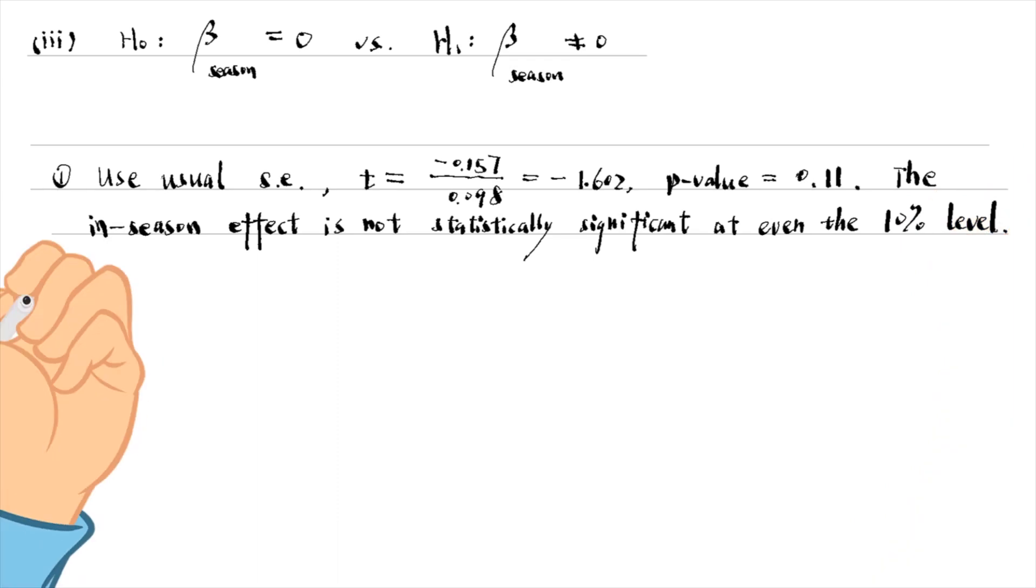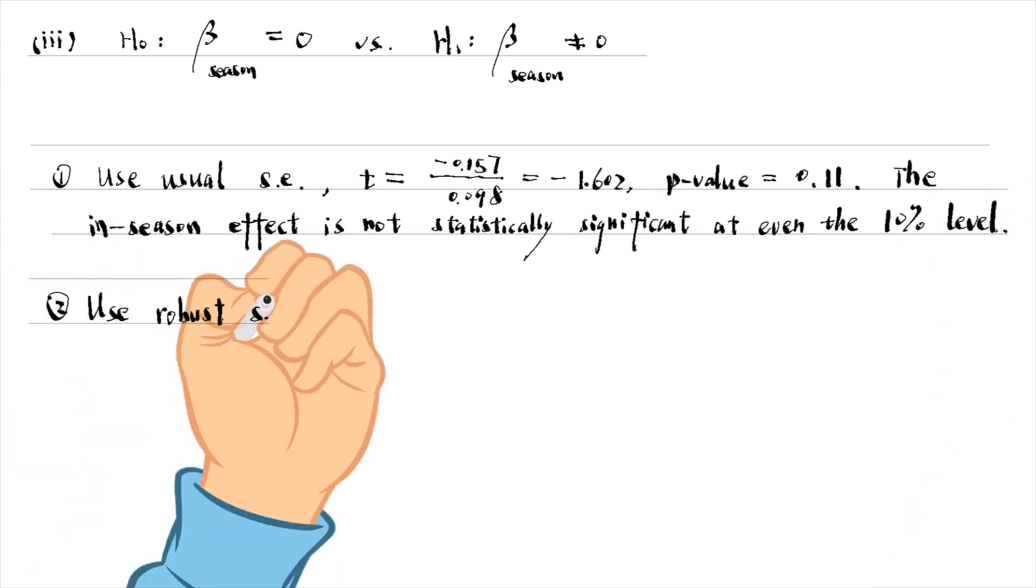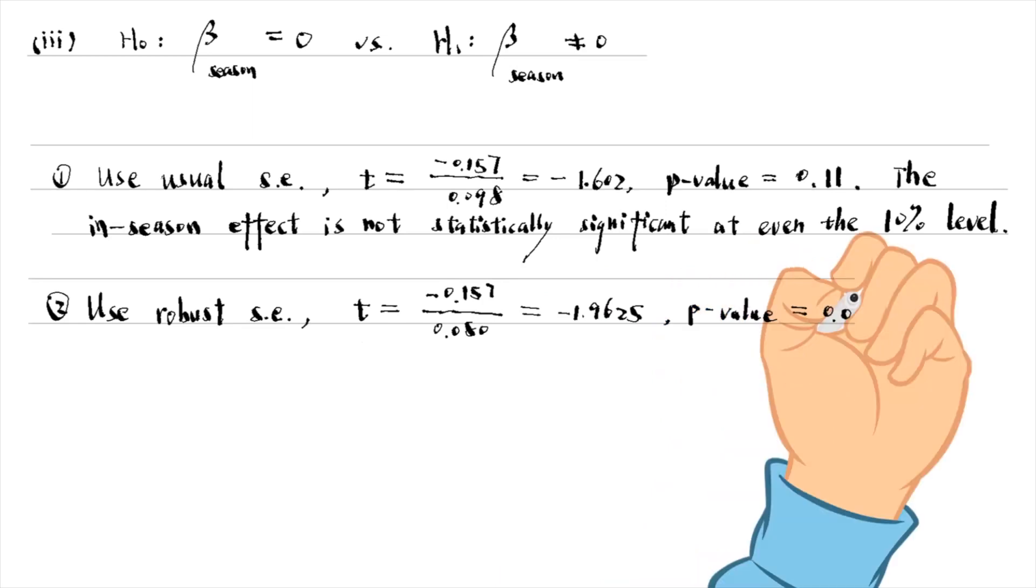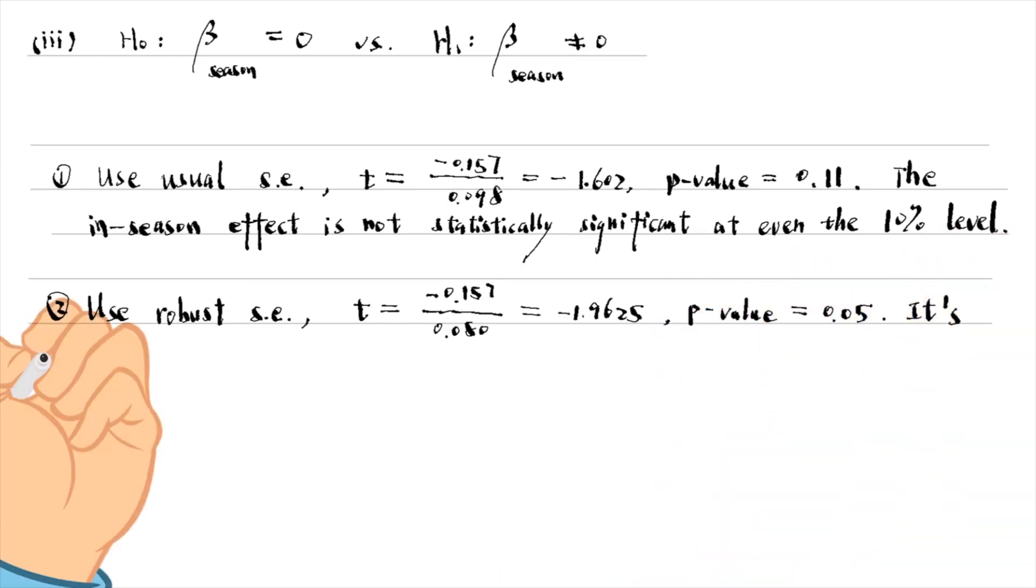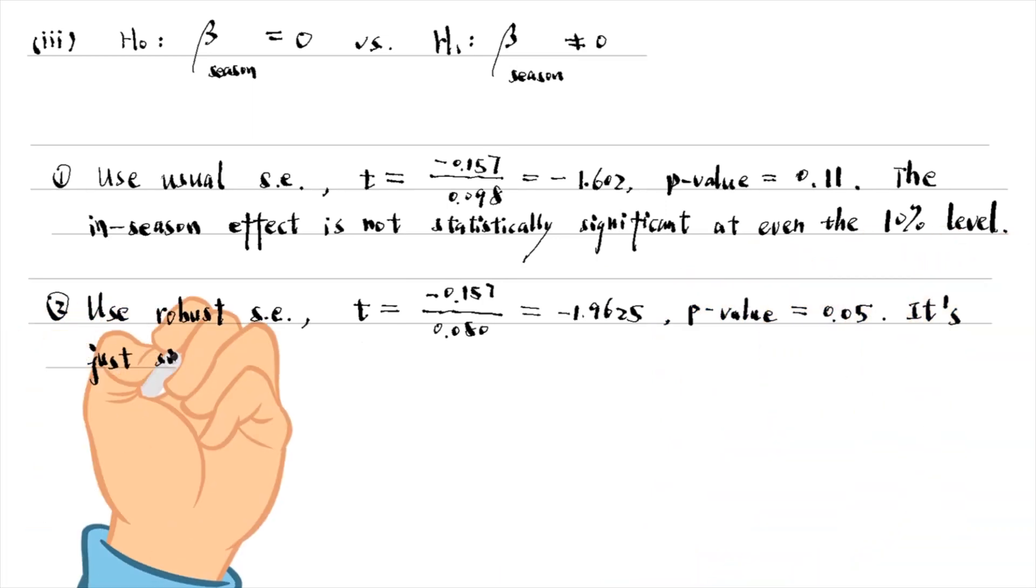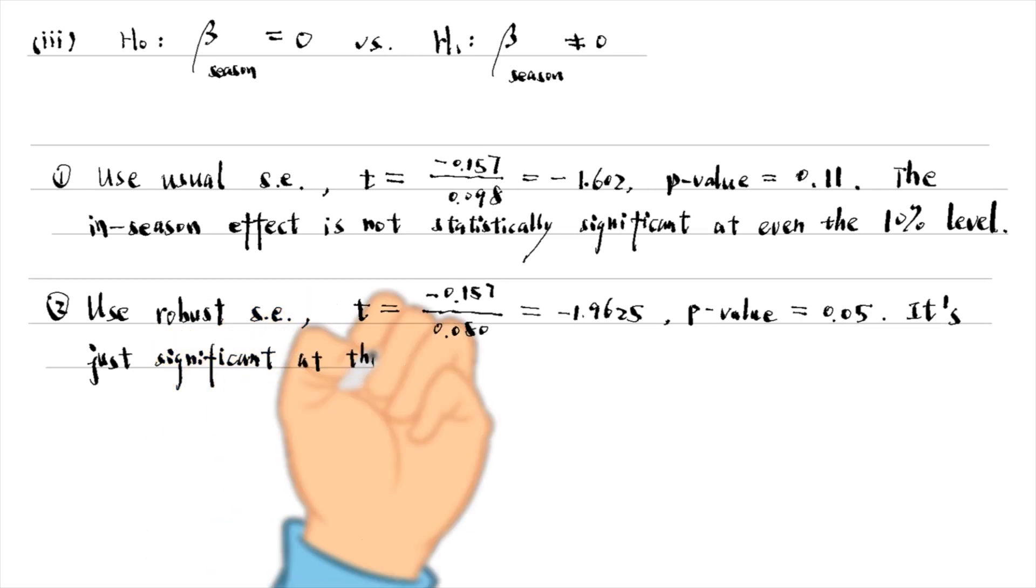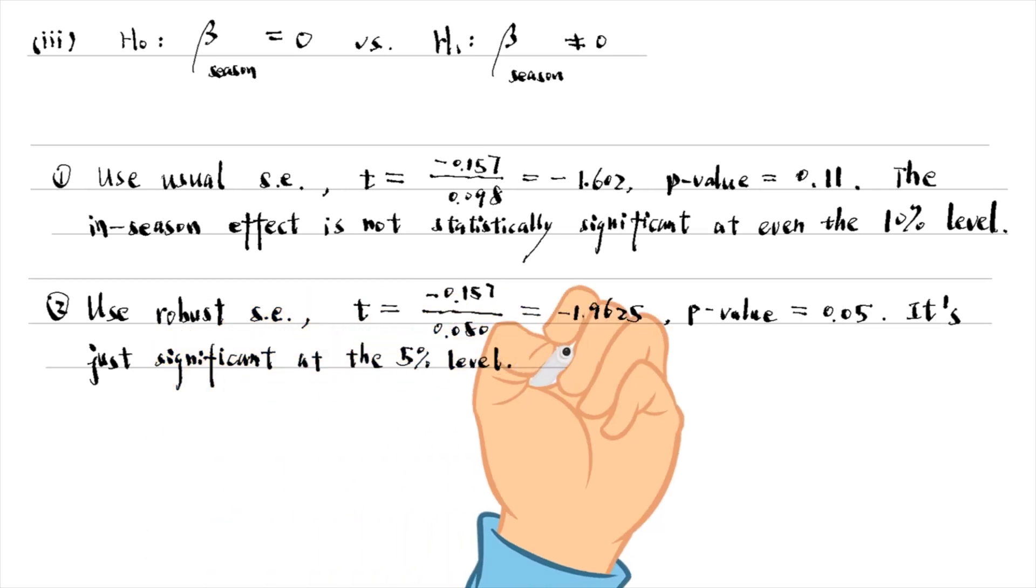But when we use the heteroscedasticity robust standard error, the t-statistic is minus 1.96, and its p-value is about 0.05. It is significant at the 5% level. It matters which standard error we use to compute the t-statistics.